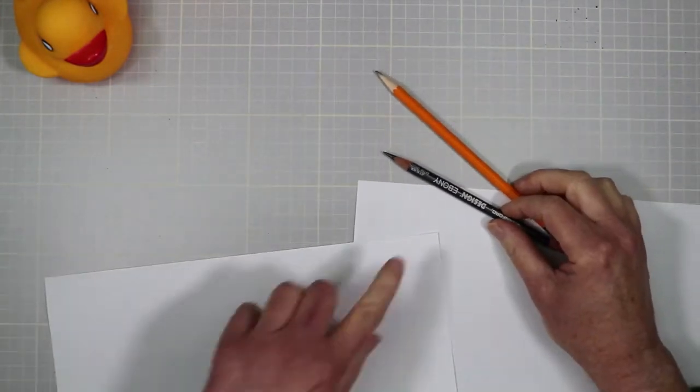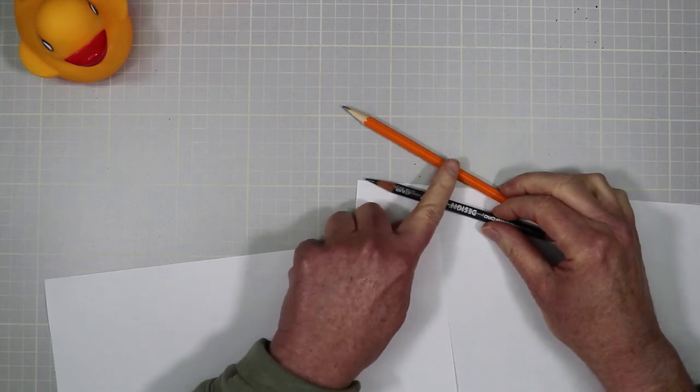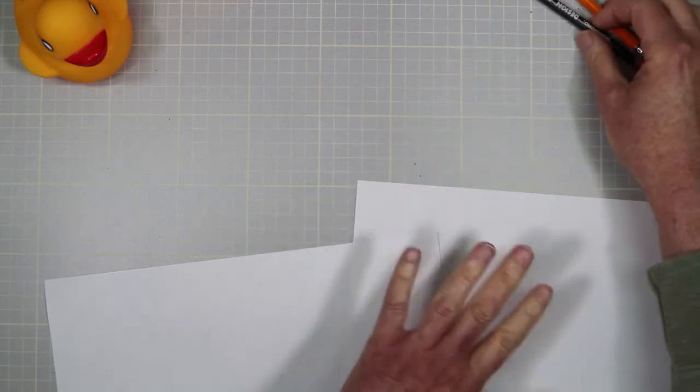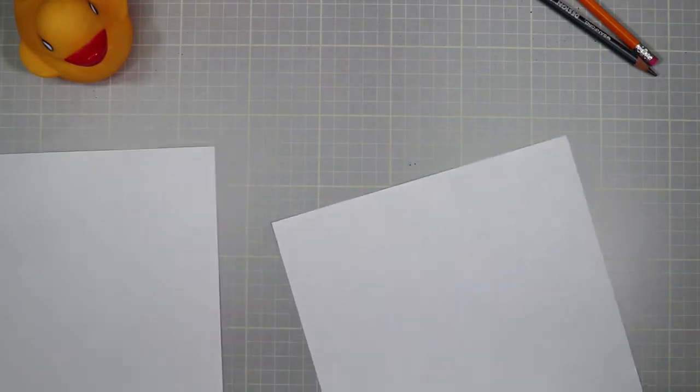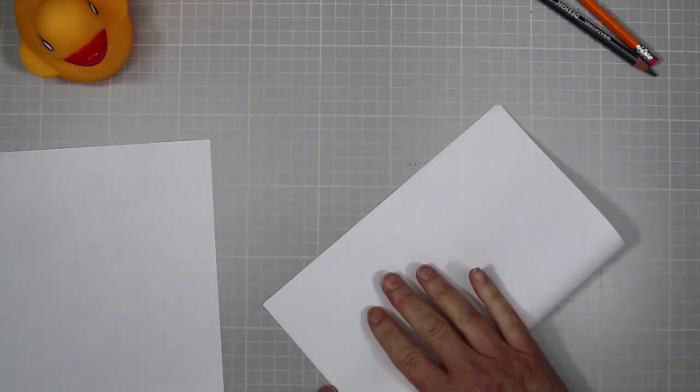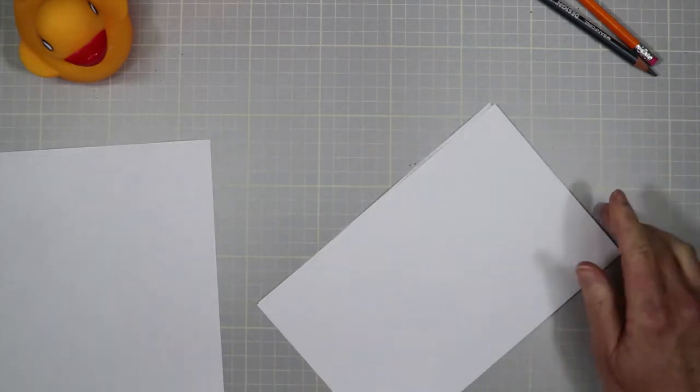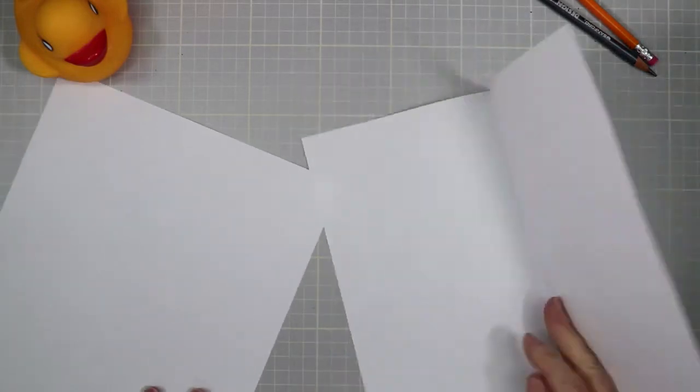Right now, I just need an ebony pencil, and I also need a regular number two pencil, and maybe a couple of sheets of plain old concept paper or prelim paper or printer paper, whatever you want to call it.